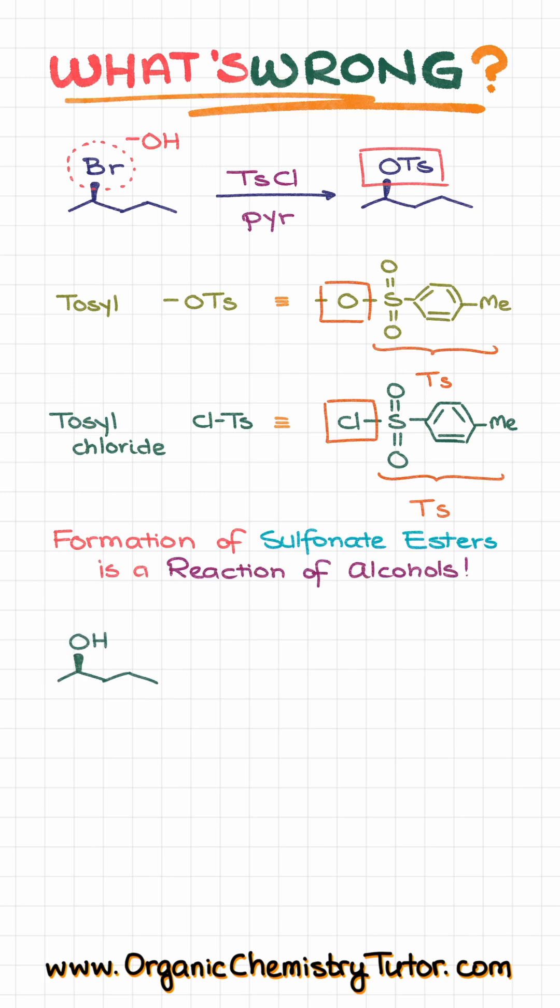So, if my starting material was an alcohol, then I could treat it with the tosyl chloride in the presence of pyridine, and make the corresponding tosylate, where the oxygen of my product comes from the oxygen in the starting material.